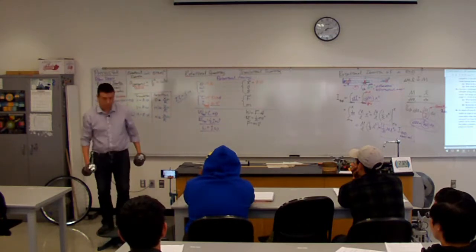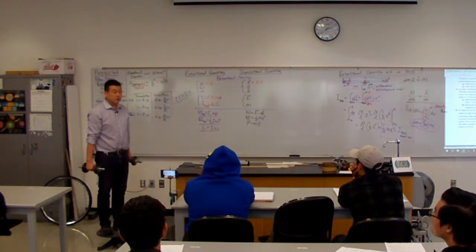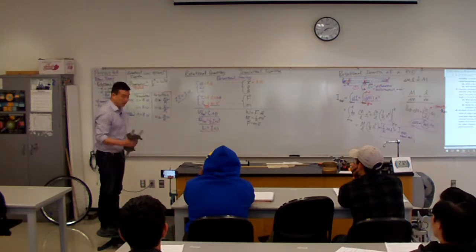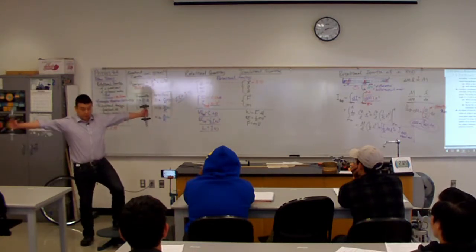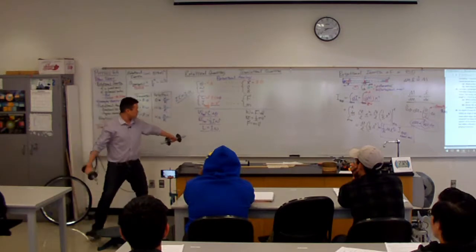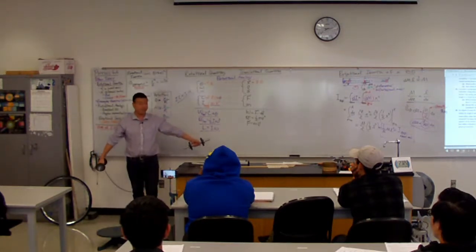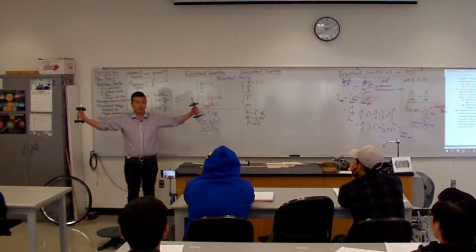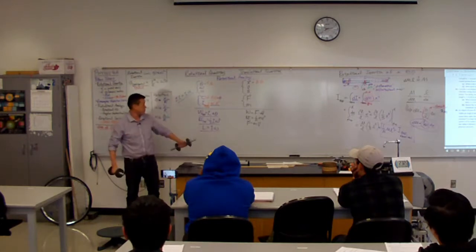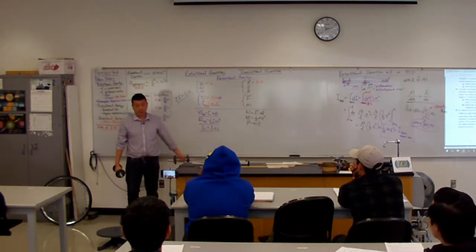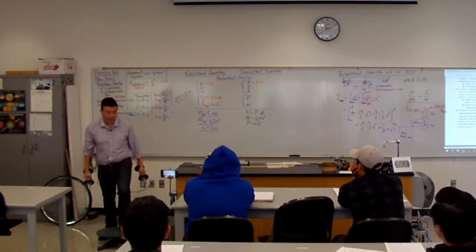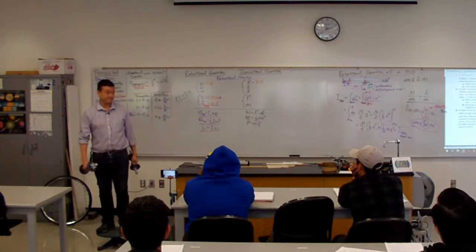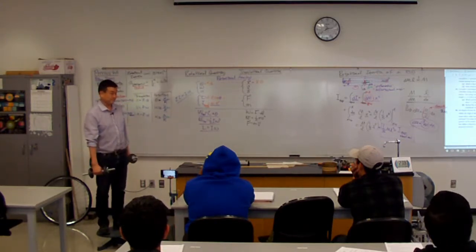So, this is what I'm going to do. I'm going to start out with these masses outstretched. So, when you look at this expression here, rotational inertia will be large. And then I'm going to bring this mass in, reducing my rotational inertia. What do you think will happen with my angular velocity? What do you think will happen with my angular momentum?